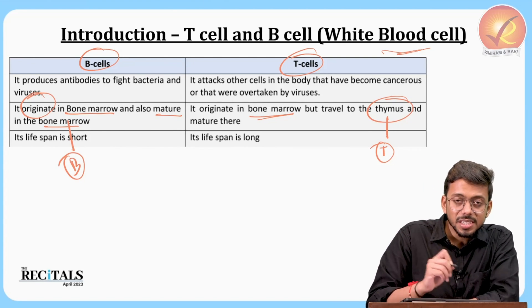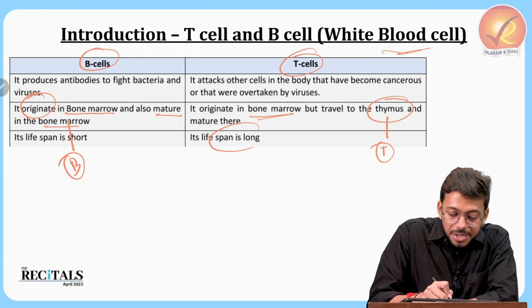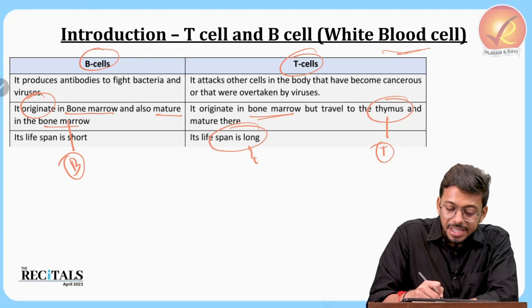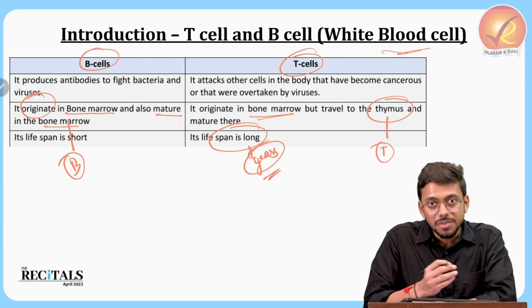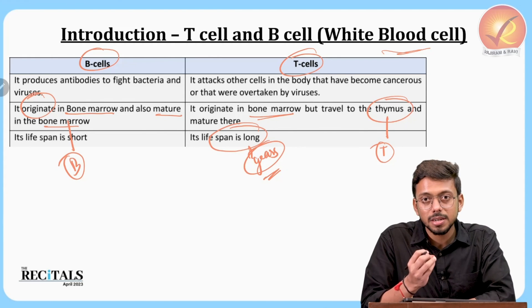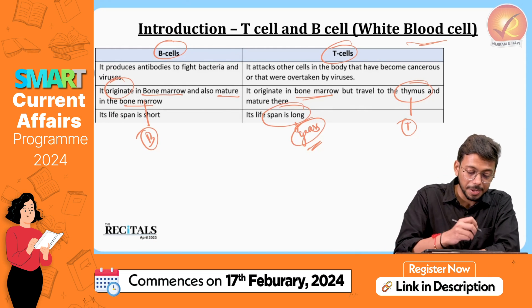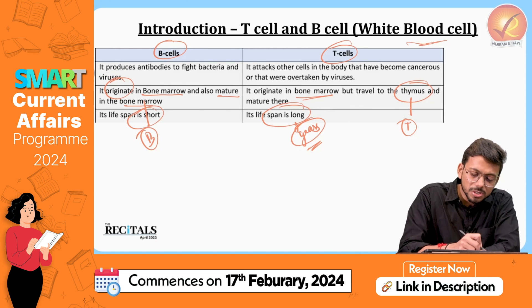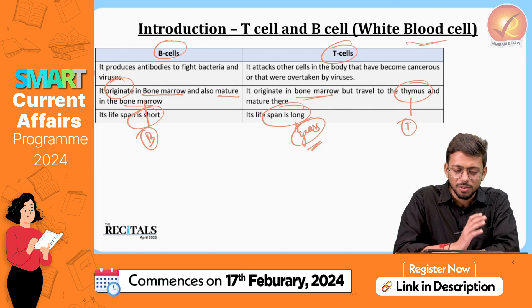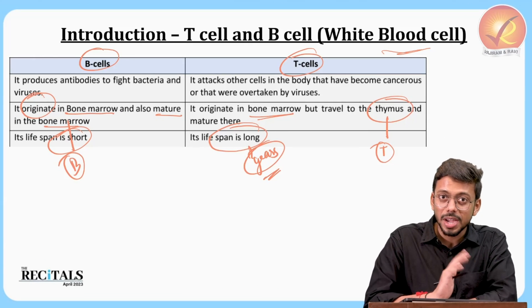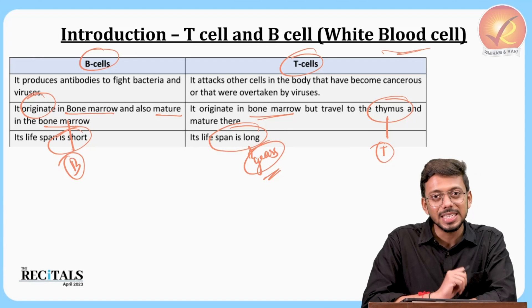Another difference is lifespan. T-cells have a longer lifespan, which can extend to years, while B-cells have a relatively shorter lifespan.